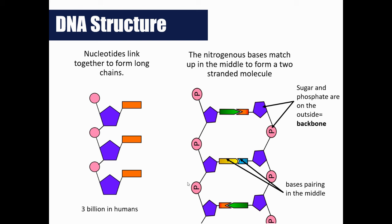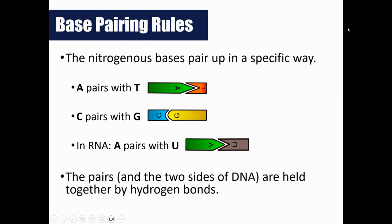Looking at your screen, here are some different structures — I want you to be familiar with what a DNA molecule looks like. You'll notice we have nucleotides that link together to form chains. Humans actually contain three billion nucleotides in a single cell. The backbone of the DNA molecule is comprised of the sugar and phosphate, and in the center are the nitrogenous bases, which pair up in a very specific way. We call these base pairing rules, and this is something you'll need to memorize for the rest of the unit and into evolution.